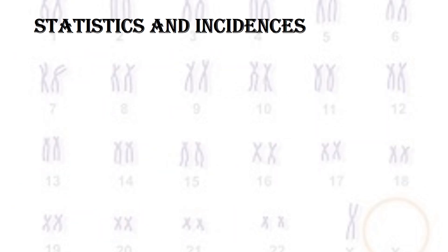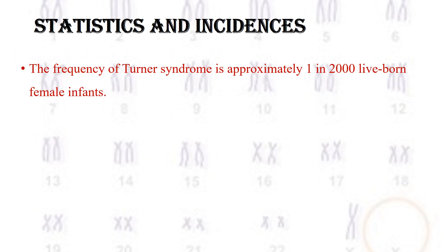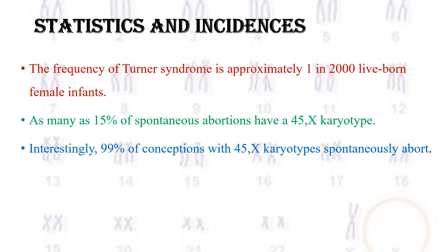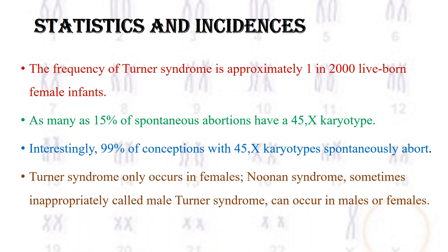The frequency of Turner syndrome is approximately 1 in 2,000 live-born female infants. As many as 15% of spontaneous abortions have a 45,X chromosome. Interestingly, 99% of conceptions with a 45,X karyotype spontaneously abort.